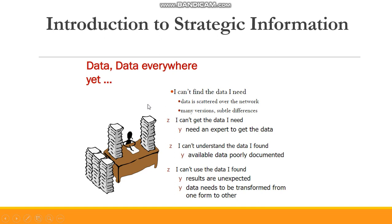So even if you have all kinds of data, people face problems like 'I can't find the data I need.' Why? Because the data is scattered over the network and many versions of data exist with subtle differences. It may happen that you have created data and there are various copies of it with minor changes, so you don't know exactly what the final data is. For example, when creating a report or an Excel file, you save it as 'final', then update it as 'final one', then 'final two'. The more times you update, the more versions you save. It becomes impossible to understand which one is the actual final version.